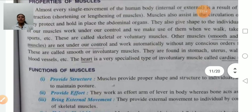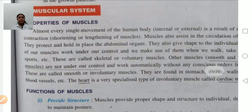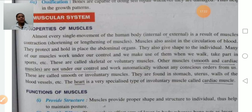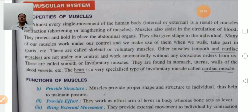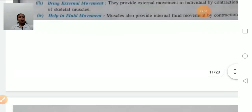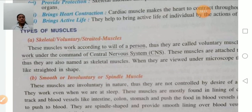Muscular system — every movement of our body, whether internal or external, is due to muscle contractions, meaning the shortening and lengthening of muscles. Due to muscle contractions, movement is possible. Muscles also help in the circulation of blood, protect and hold the abdominal organs in place, and provide shape to the individual. There are three types of muscles: skeletal muscles (voluntary), smooth muscles, and cardiac muscles.